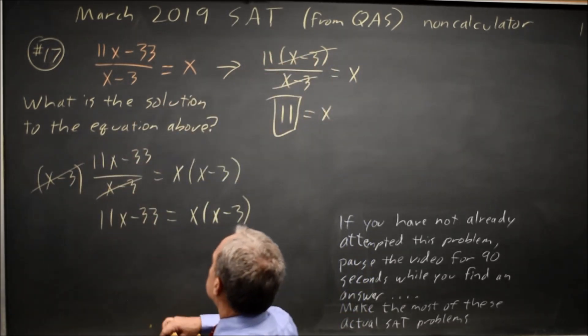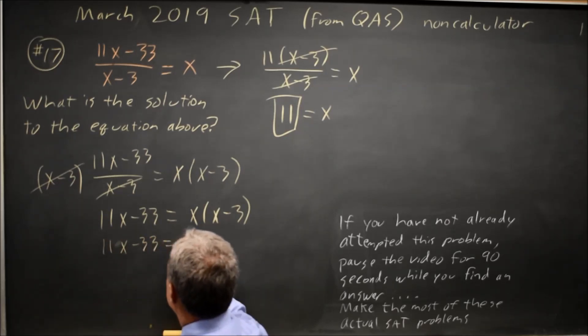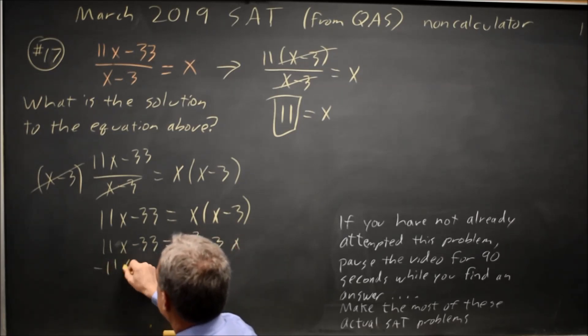If not, I can distribute 11x minus 33 equals x squared minus 3x, subtract 11x from both sides,